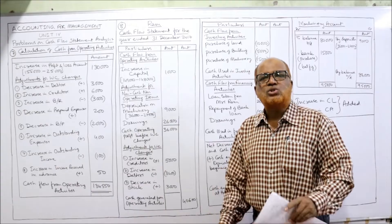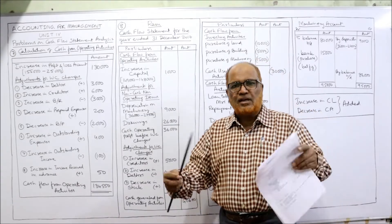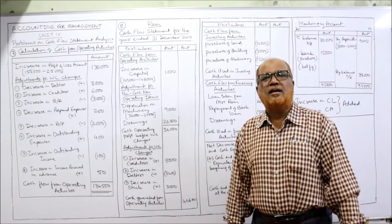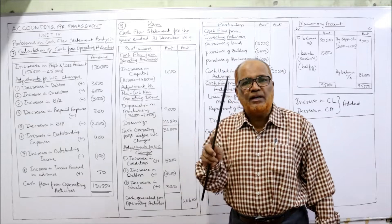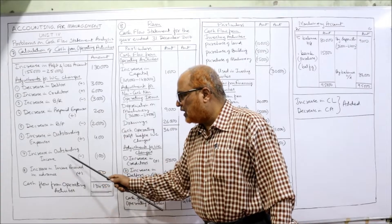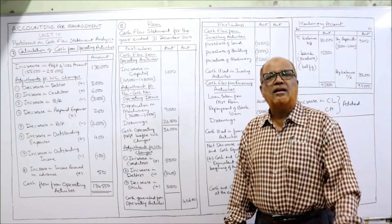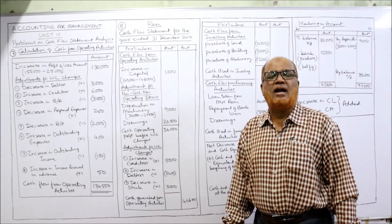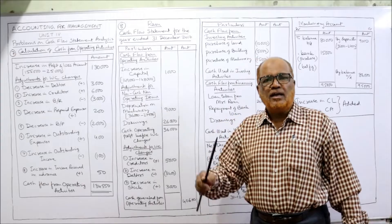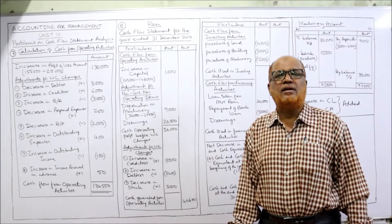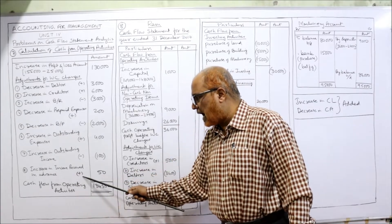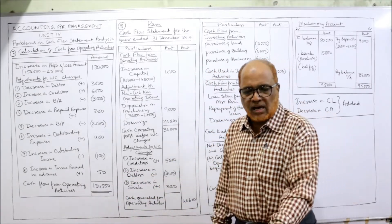Outstanding expenses is a current liability. Last year 1,200, current year 1,600 — increase in current liability, so it should be added. Increase in outstanding expenses: add 400. Lastly, income received in advance — it's a current liability. Last year 250, current year 300 — increase in current liability should be added. Increase in income received in advance: add 50. All items have been explained — which ones to add and which ones to deduct.